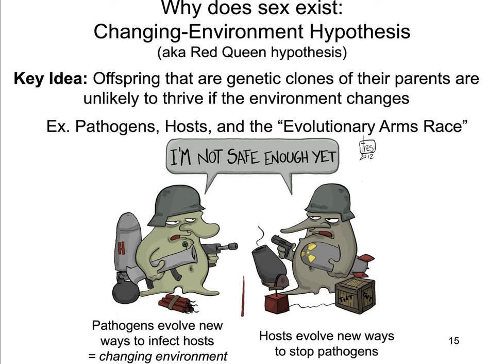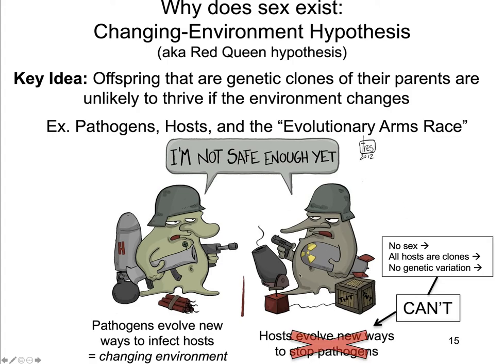A host organism gets infected by a pathogen, develops immunity, then the pathogen develops resistance to that immunity, and it goes back and forth — pathogens evolving new ways to infect hosts, hosts evolving new ways to stop the pathogen. In both cases there's a changing environment. If the host has no sex, all hosts are genetic clones; there's no genetic variation and potentially no ability to evolve new ways to stop the pathogen. Eventually the pathogen can win out and the host population disappears.